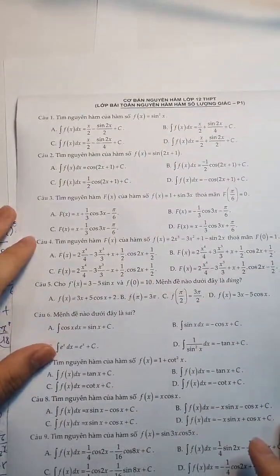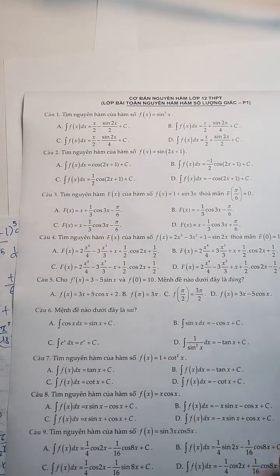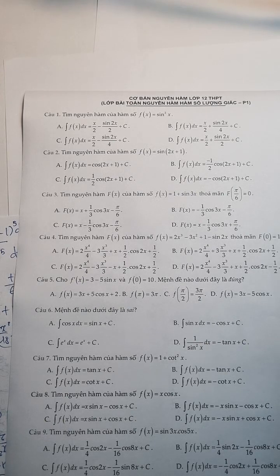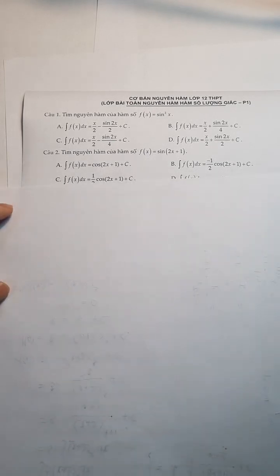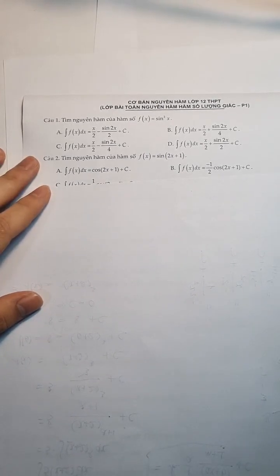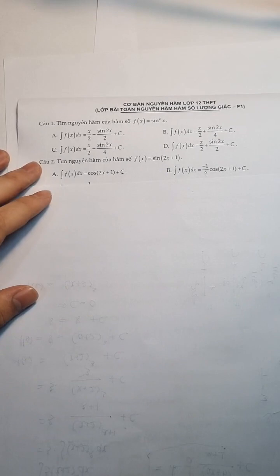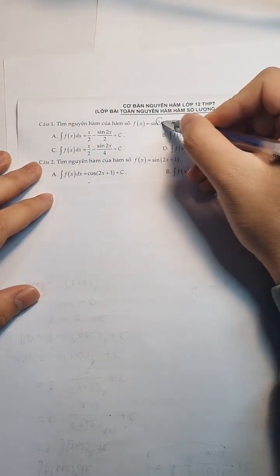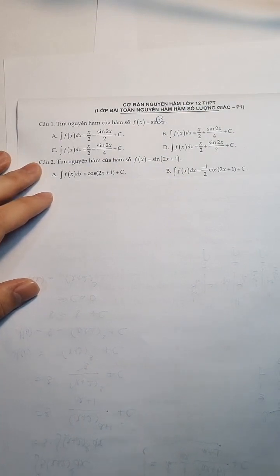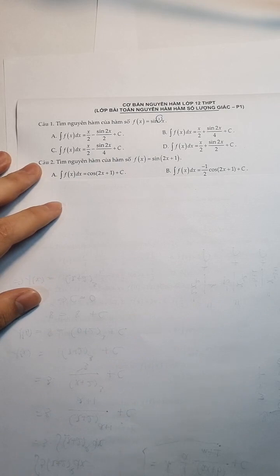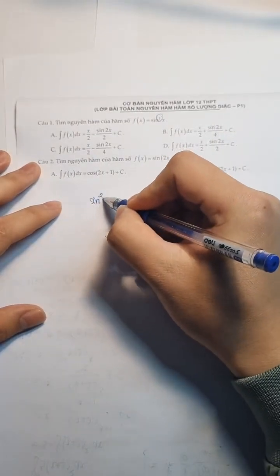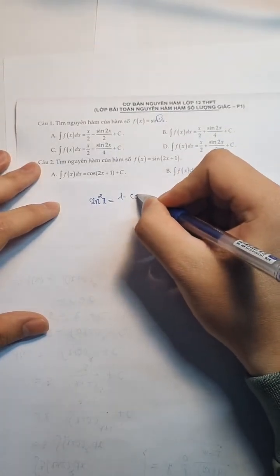Tiếp nhá. Câu số 1 này. Bây giờ người ta cho sin²(x) đúng không? Các bạn chú ý. Thì bây giờ mình sẽ đưa về công thức nhân đôi. Công thức nhân đôi. Sin²(x) lượng giác thì các bạn phải nhớ. Công thức lượng giác ấy đúng không? Đó là 1 - cos(2x) trên 2.